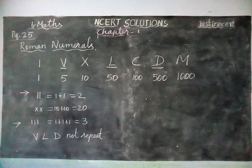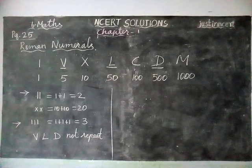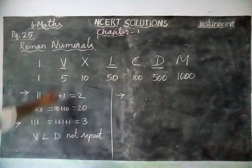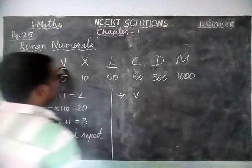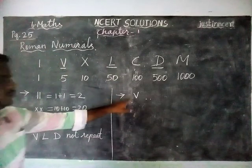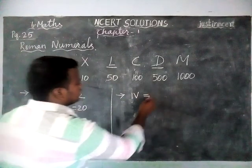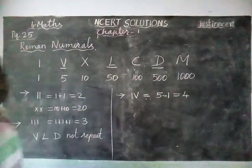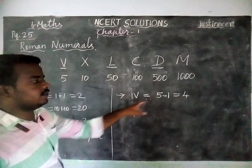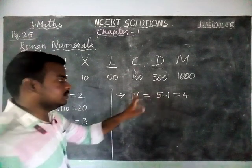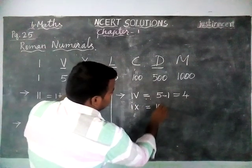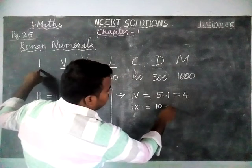And next: if we write a smaller value on the left-hand side of a greater value, the value will decrease. Here the greater value is 5. If I write a smaller value on the left-hand side, the value will decrease — 5 minus 1 is equal to 4. Next example: X is the greatest value, 10. The other value is equal to 1. So 10 minus 1 is equal to 9.